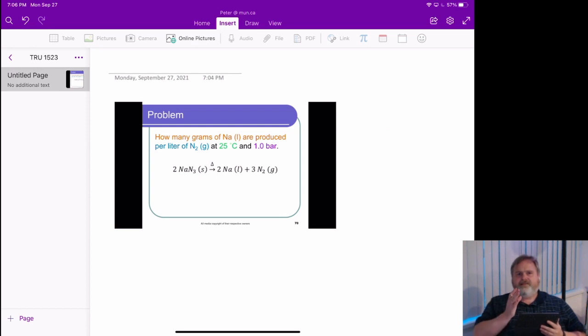So we see that we've got information of the nitrogen gas product in terms of liters, temperature, and bar, three of the state variables. The only one that isn't there: amount, moles. We're going to use the ideal gas law to figure out the number of moles of nitrogen and then use the stoichiometry of the reaction to connect that to the amount of sodium. And then we'll use the molar mass to figure out the actual final mass of sodium. So let's work on that.